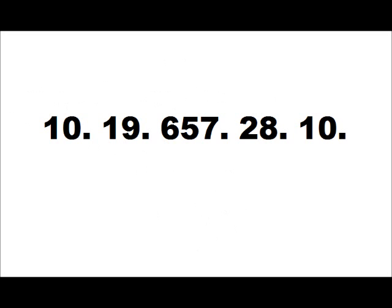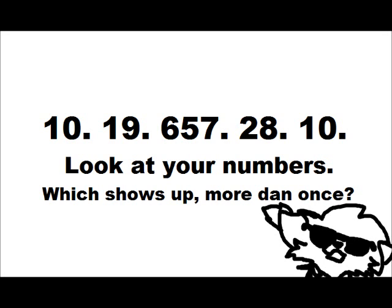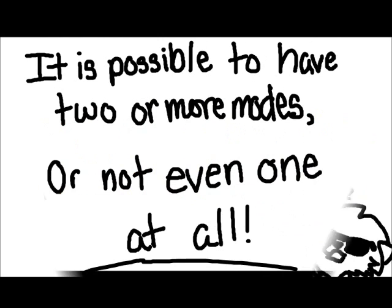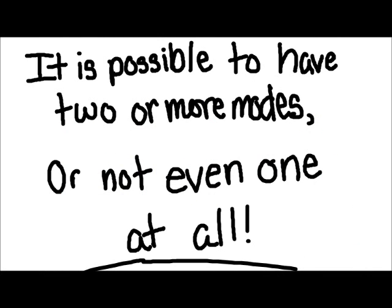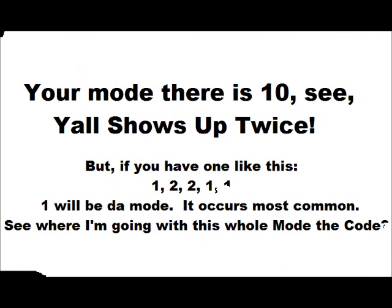Now, here's y'all mode, just like a code. 10, 19, 6, 57, 28, and 10. Look, y'all — the number that shows up the most. It's possible to have two modes, or not even one at all. Mode there's 10 — it shows up twice. But if you have one like this: 1, 2, 2, 1, 1 — 1 would be y'all mode. Y'all see where I'm going with this whole mode code.